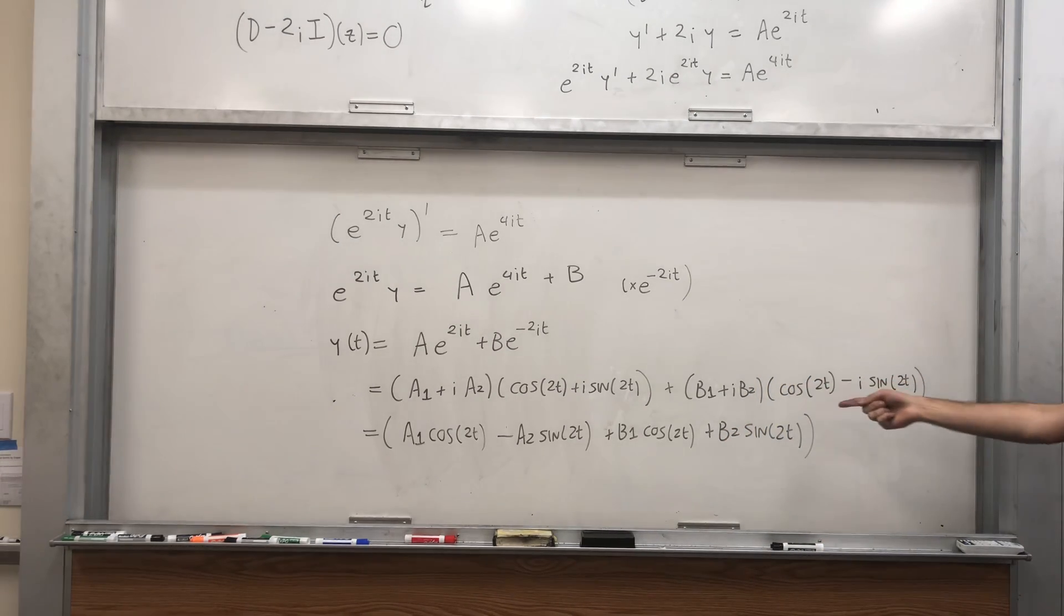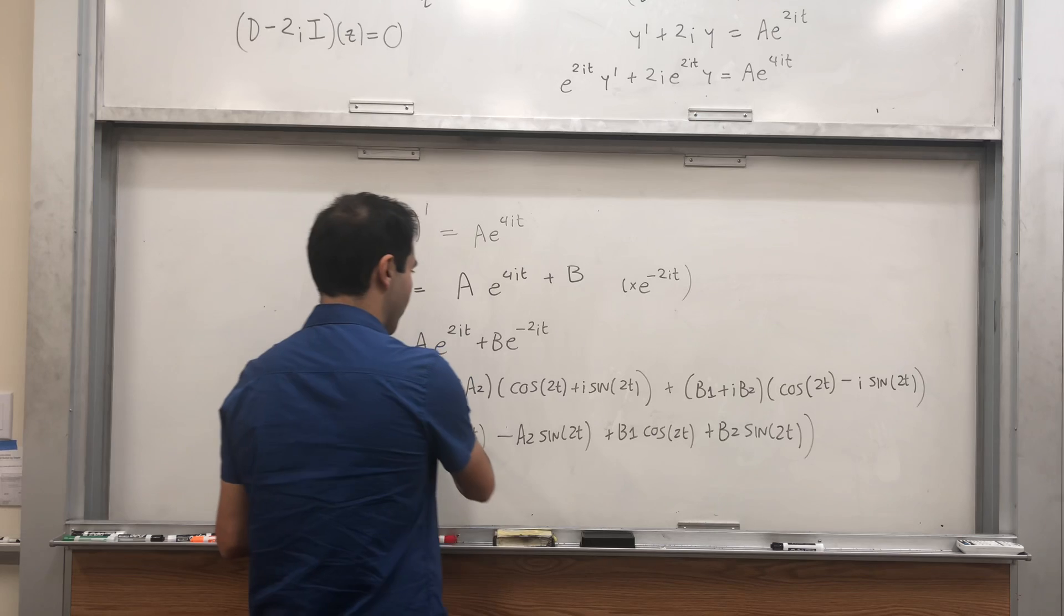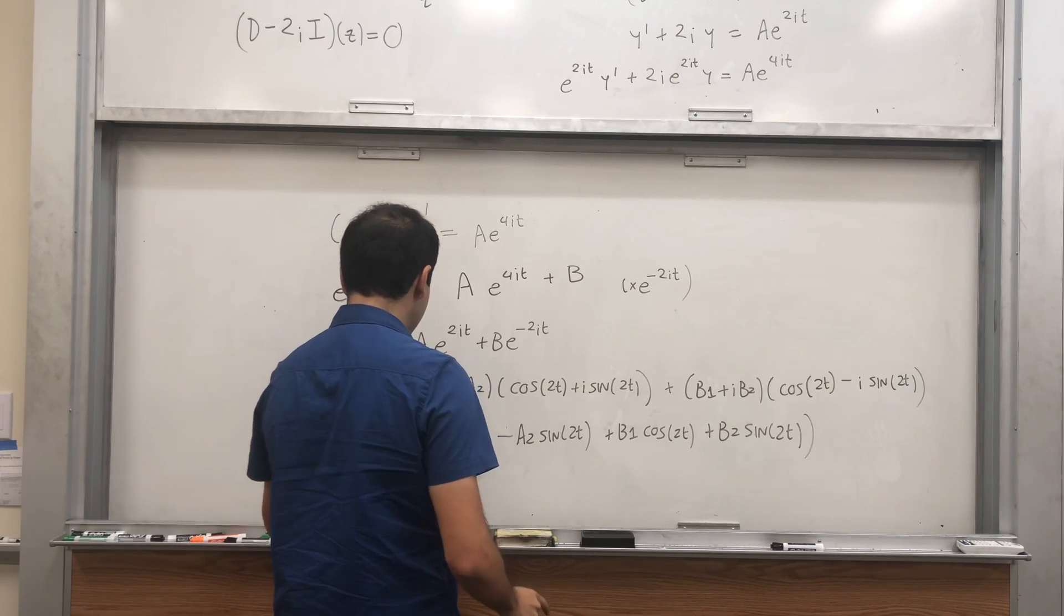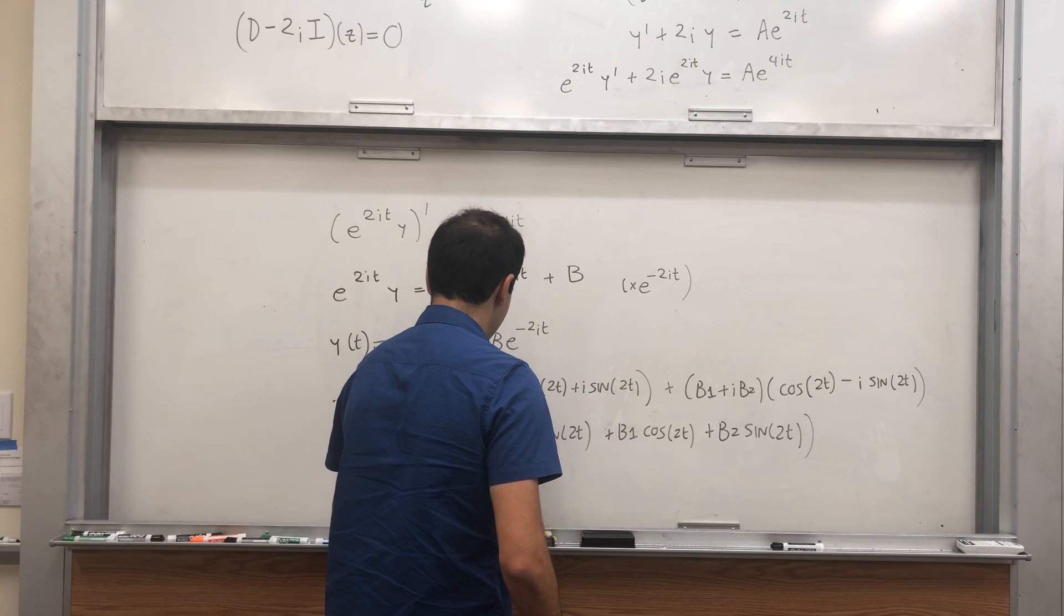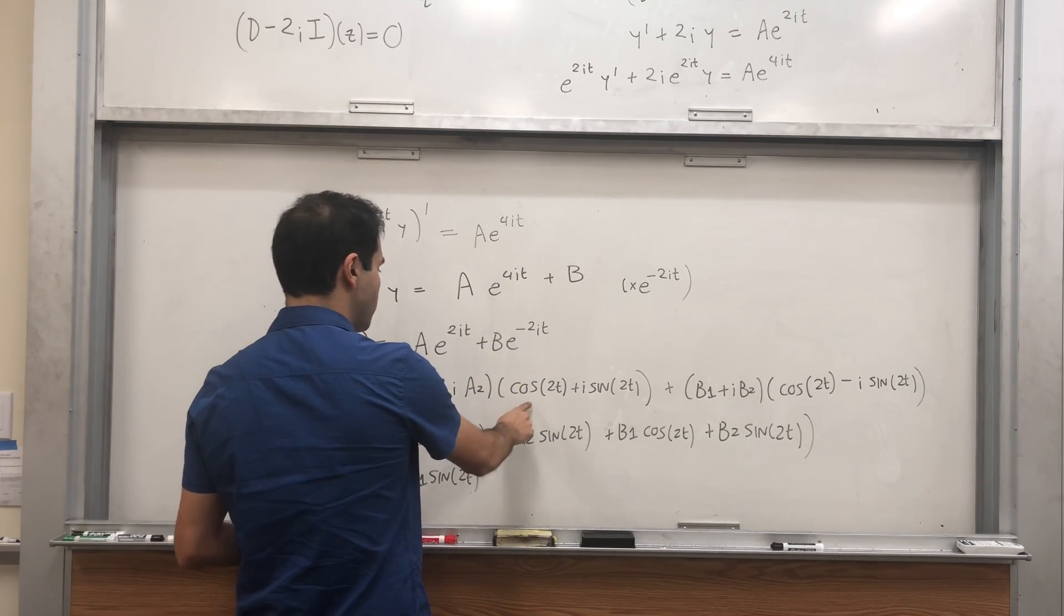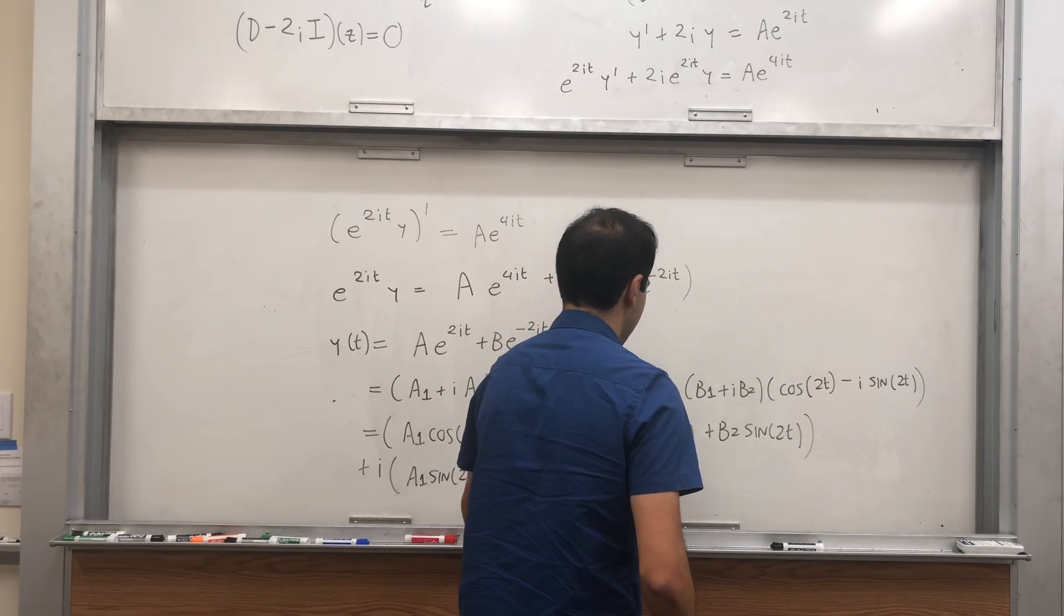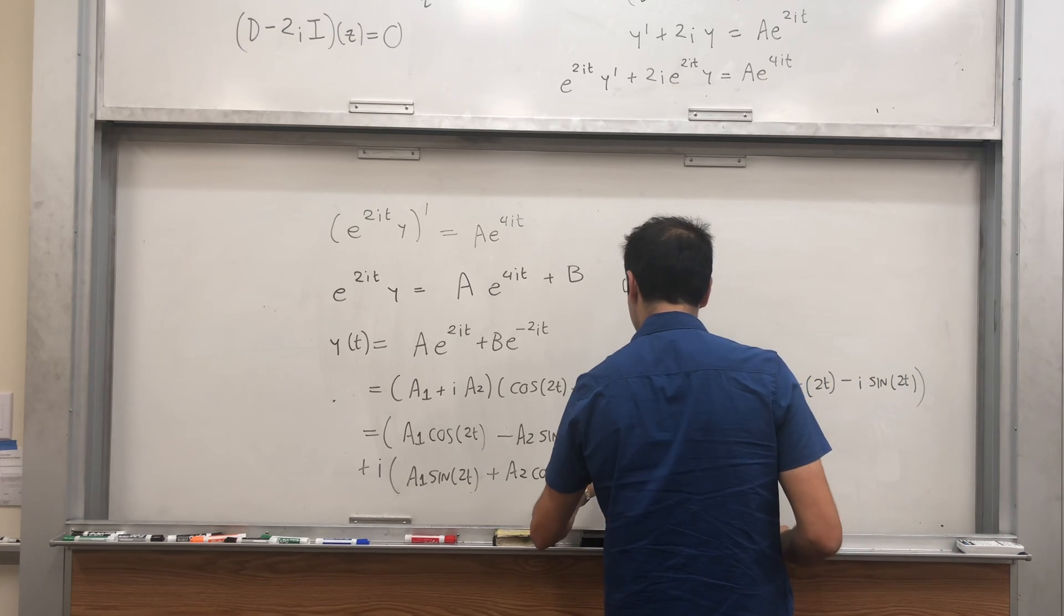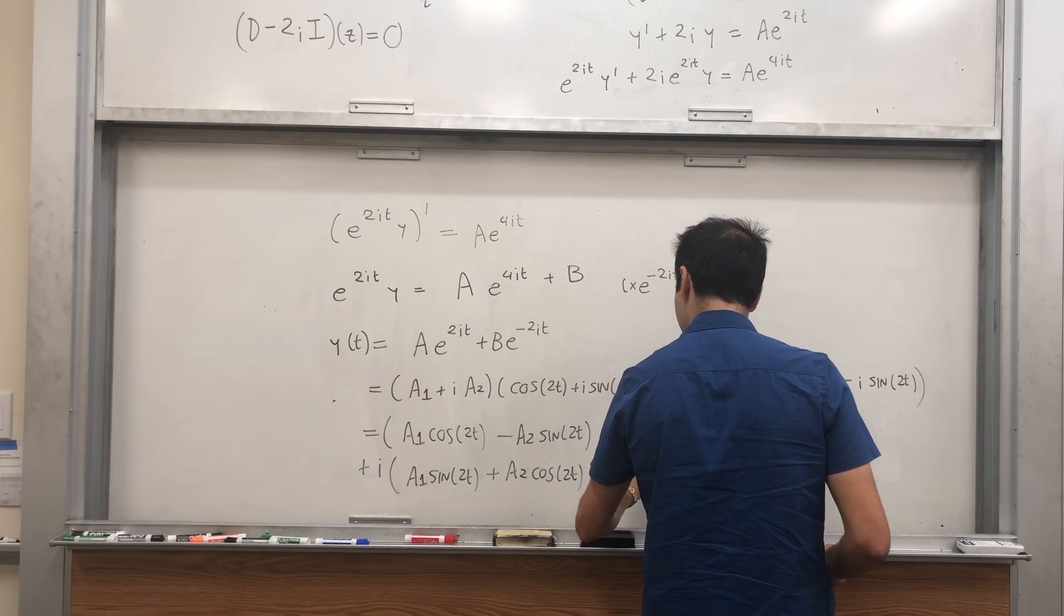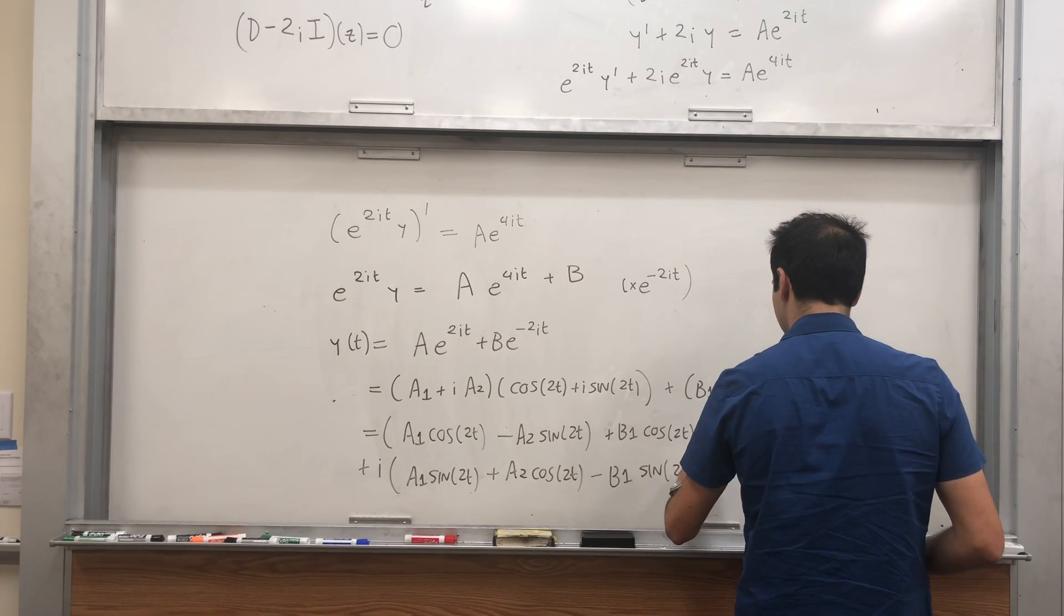So this technically gives you your real part, which is huge, and then your imaginary part, plus i. So, a1 sine of 2t, and then a2 cosine of 2t, and then minus b1 sine of 2t, and then plus b2 cosine of 2t.